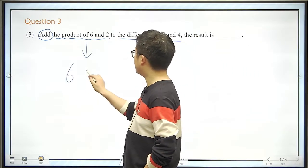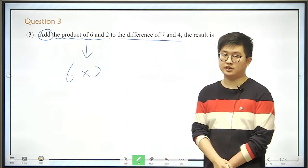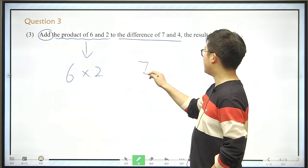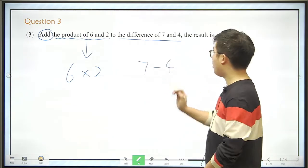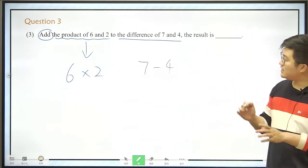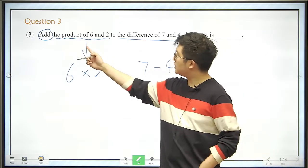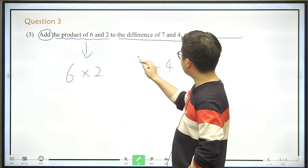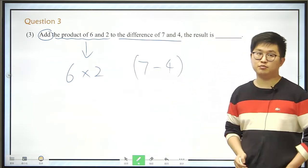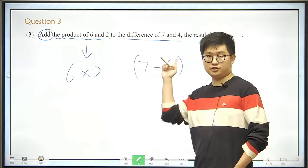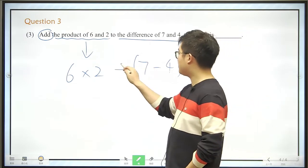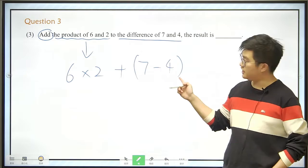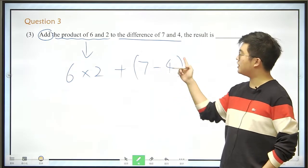So the product of 6 and 2, that is 6 times 2. And the difference of 7 and 4, that is 7 minus 4. And we need to add the product and the difference. So product is this, but difference here, we need brackets again because we should calculate this first. So just add them up. Add them up, don't miss the brackets. We need them because we need to calculate the difference. Then add it to the product.